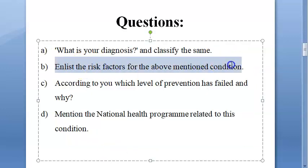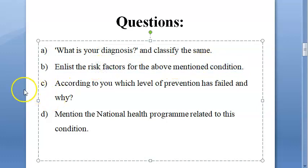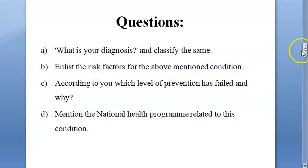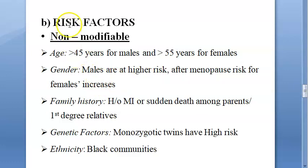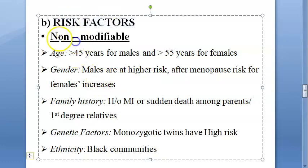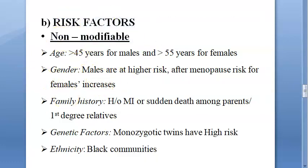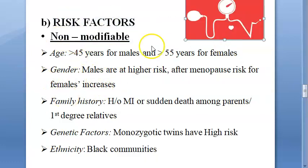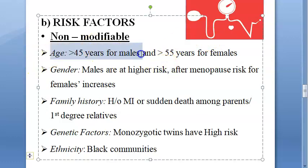Now let us enlist the risk factors for the above-mentioned condition. There are non-modifiable risk factors and modifiable risk factors. Non-modifiable means whatever the person does, he cannot change those things. For example, age — for men above 45 years of age, it is a non-modifiable risk factor.